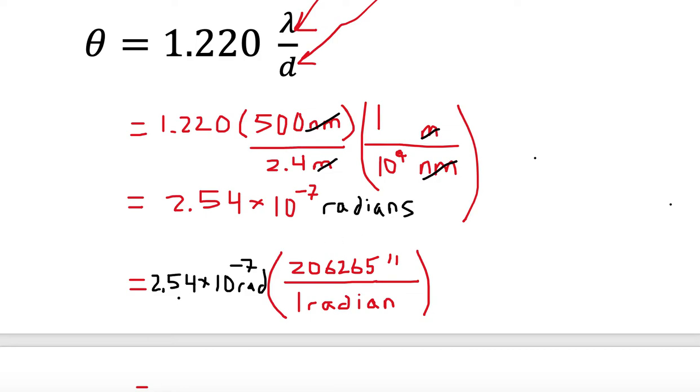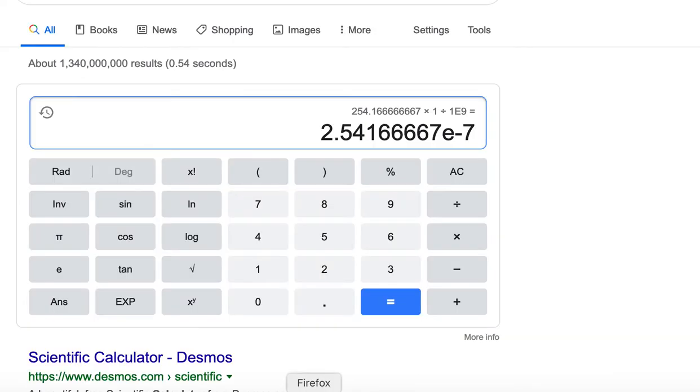Now we want to take our 2.54 times 10 to the minus 7, multiply by 206265. So we multiply by 206265 equals, and there was a divide by 1. We're left with 0.0524 as our answer.